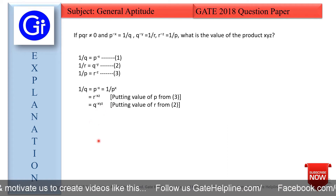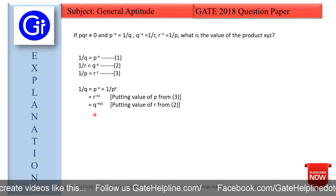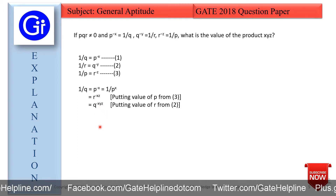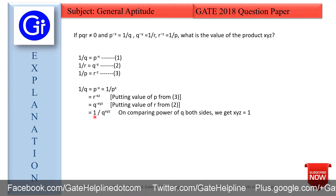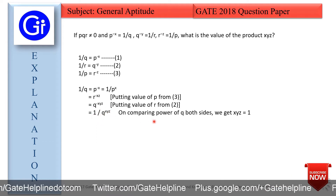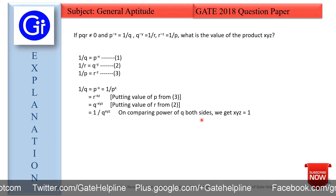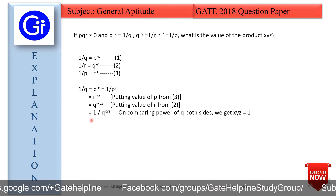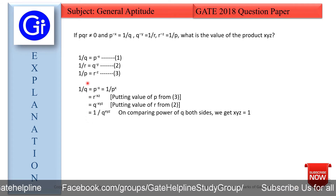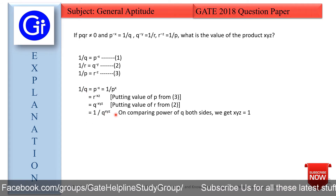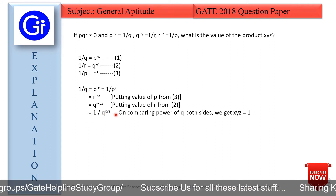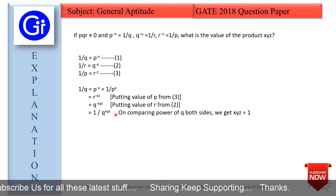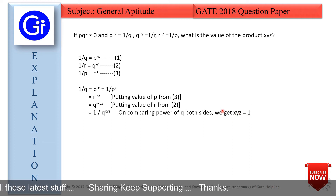We can write Q raised to the power minus XYZ as 1 upon Q raised to the power XYZ. Now comparing both sides, we have 1 upon Q on the left and 1 upon Q raised to the power XYZ on the right. Since the bases are equal, the powers must be equal — so XYZ equals 1.